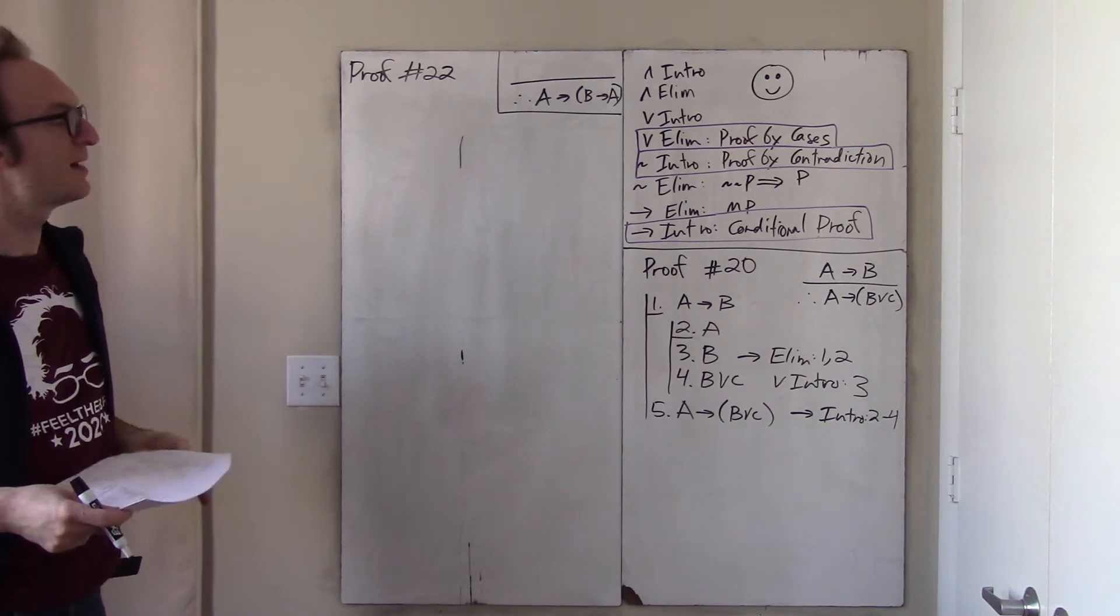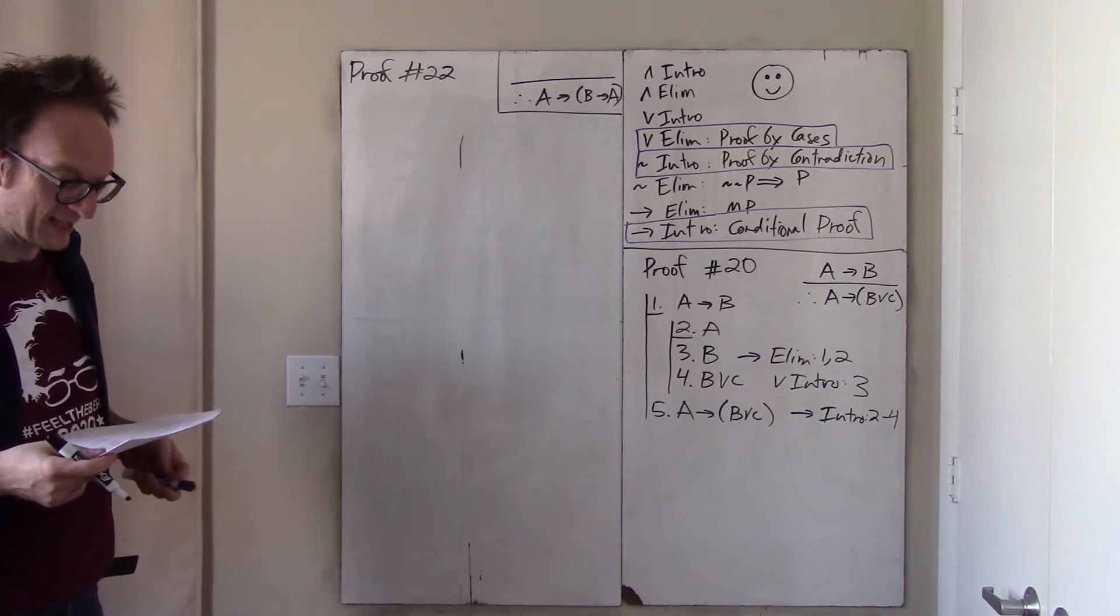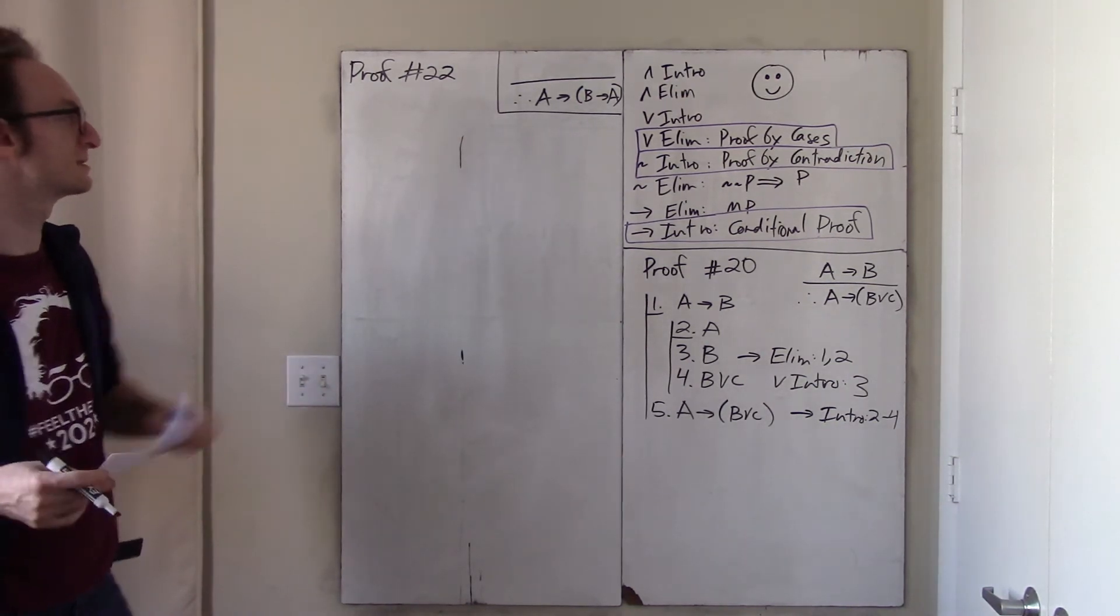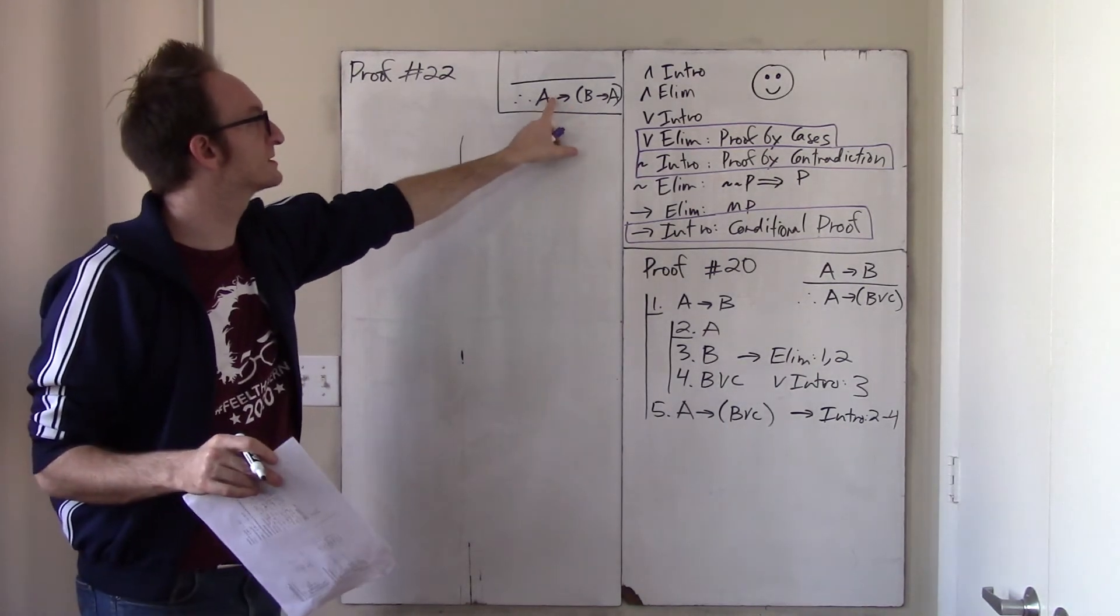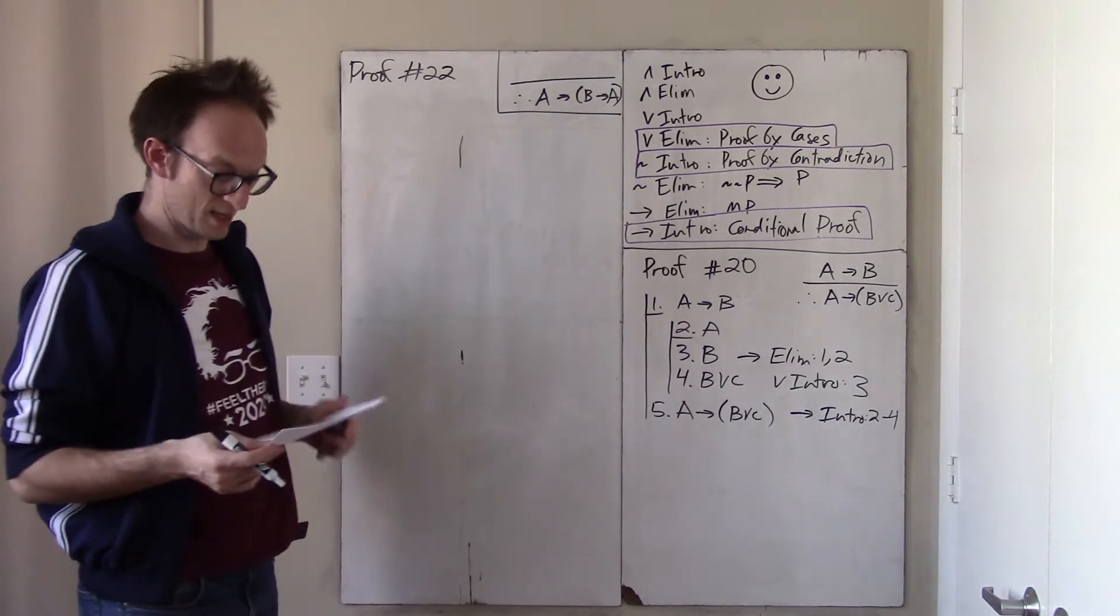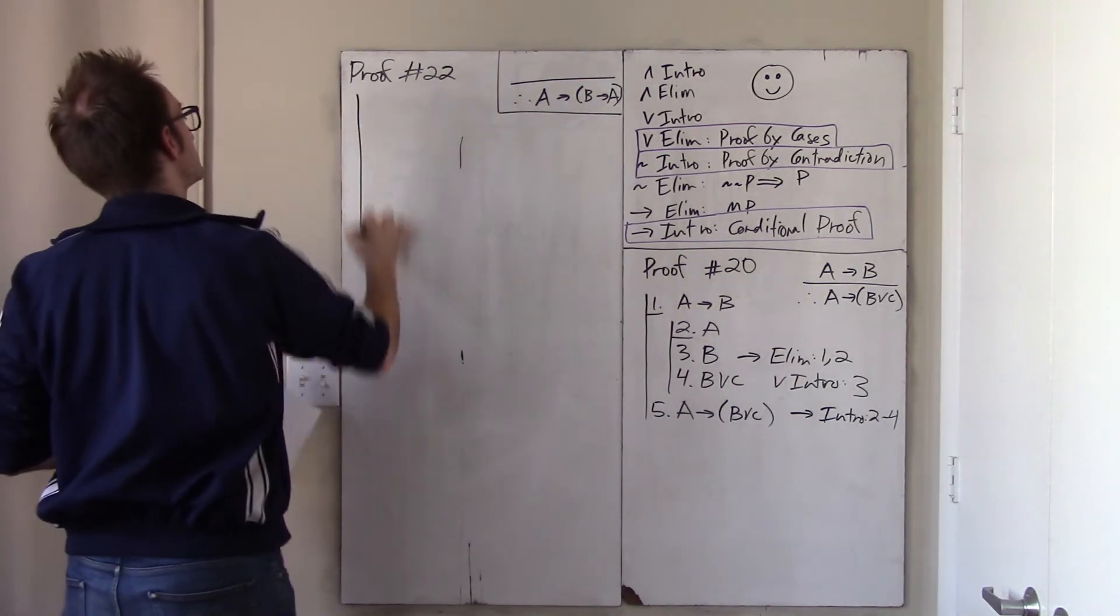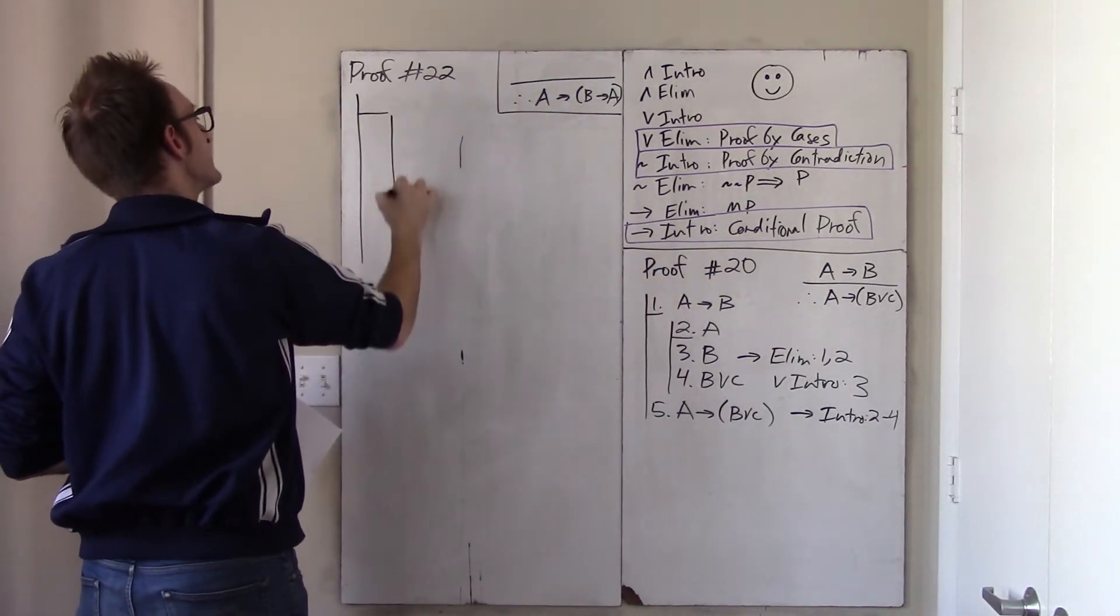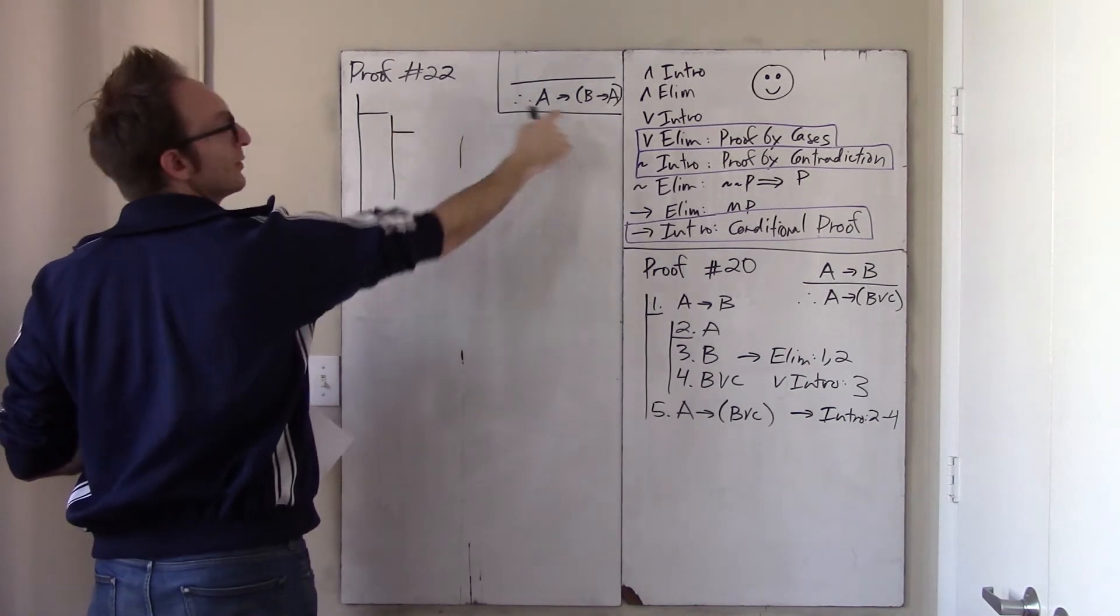If A then B arrow A. Okay, from no premises. In other words, we're just really proving, it's not really an argument exactly, we're just proving that this is a tautology. Okay, let's do it. So, I have an argument with no premises, and I have only one thing I need to do.